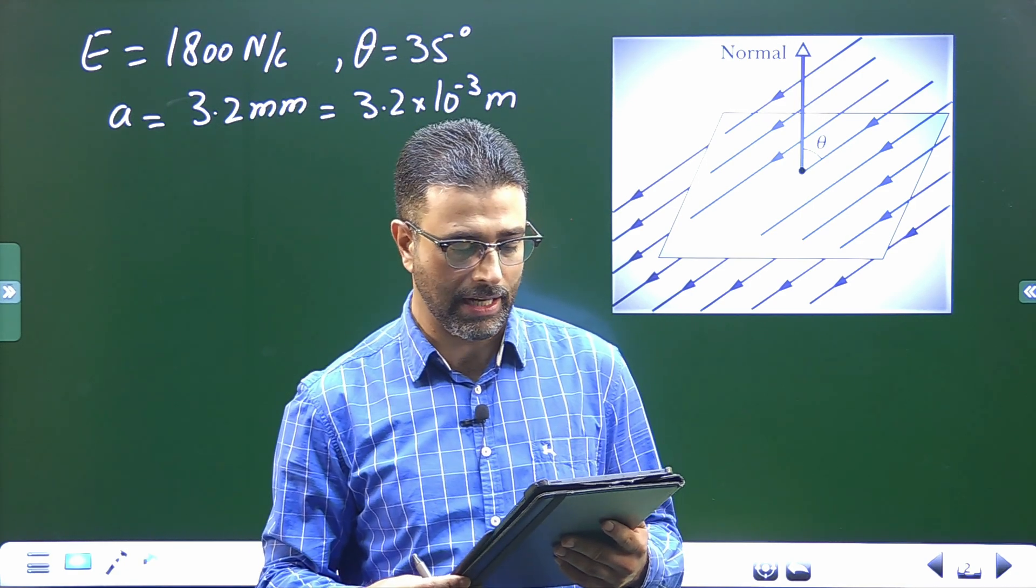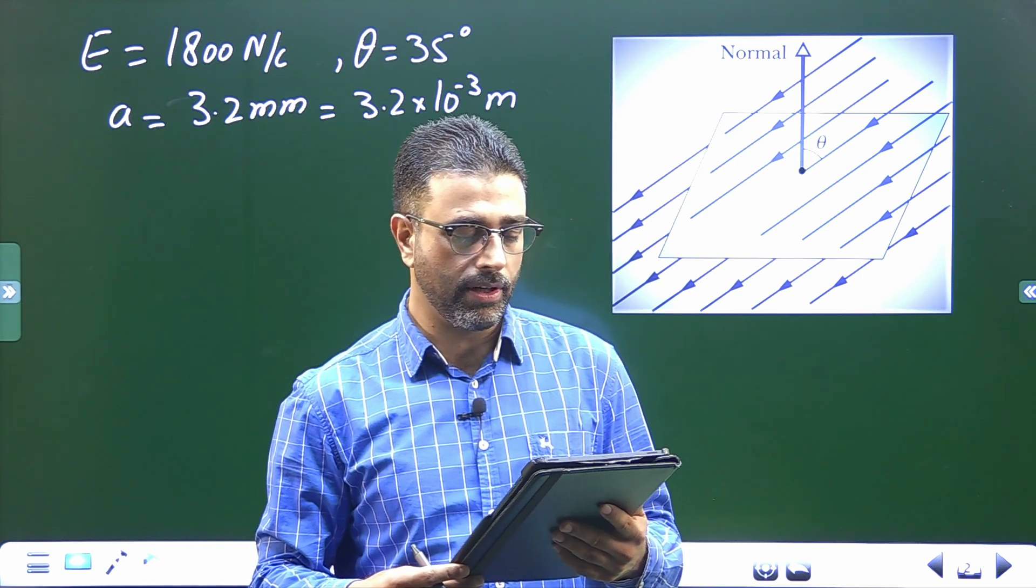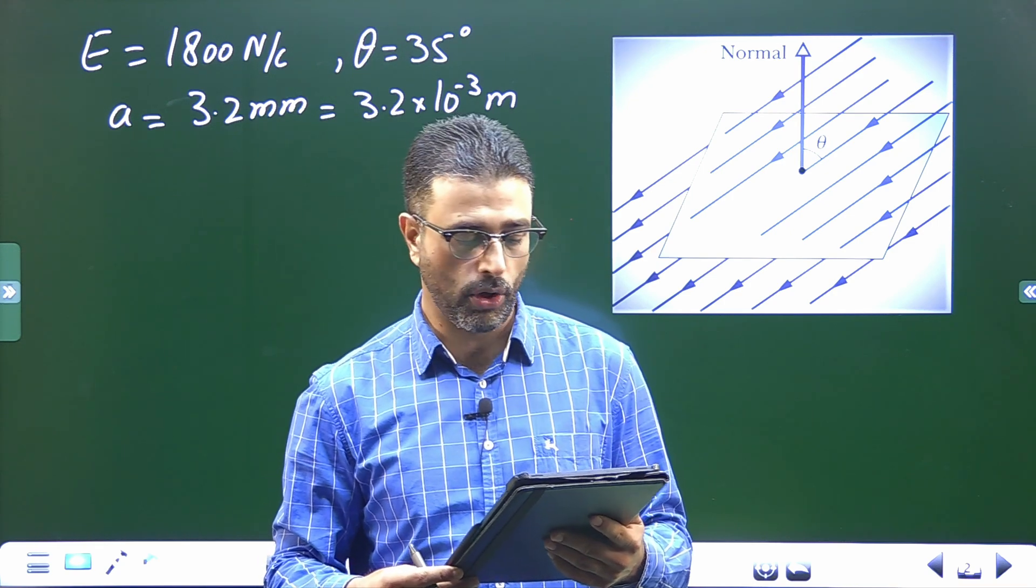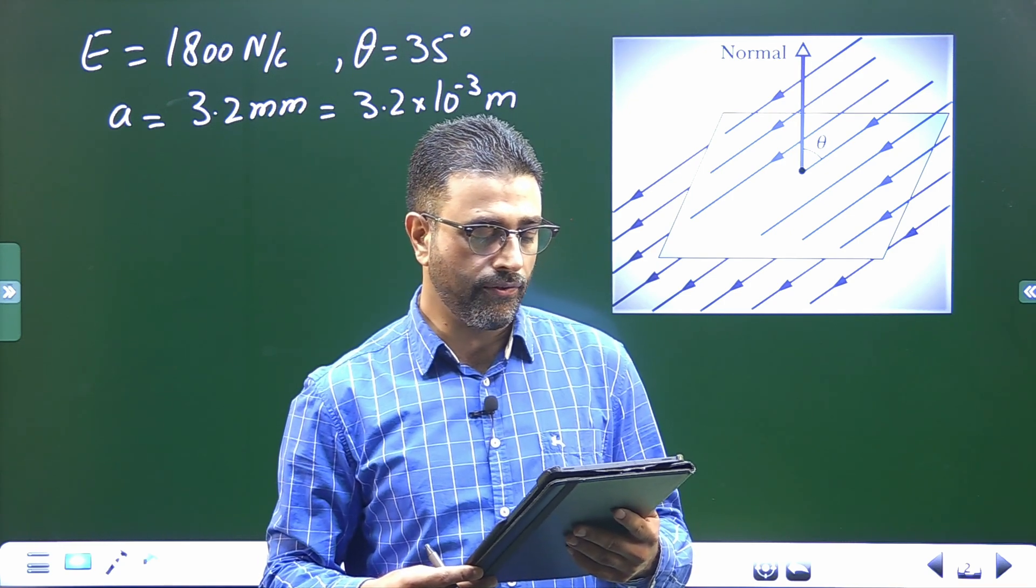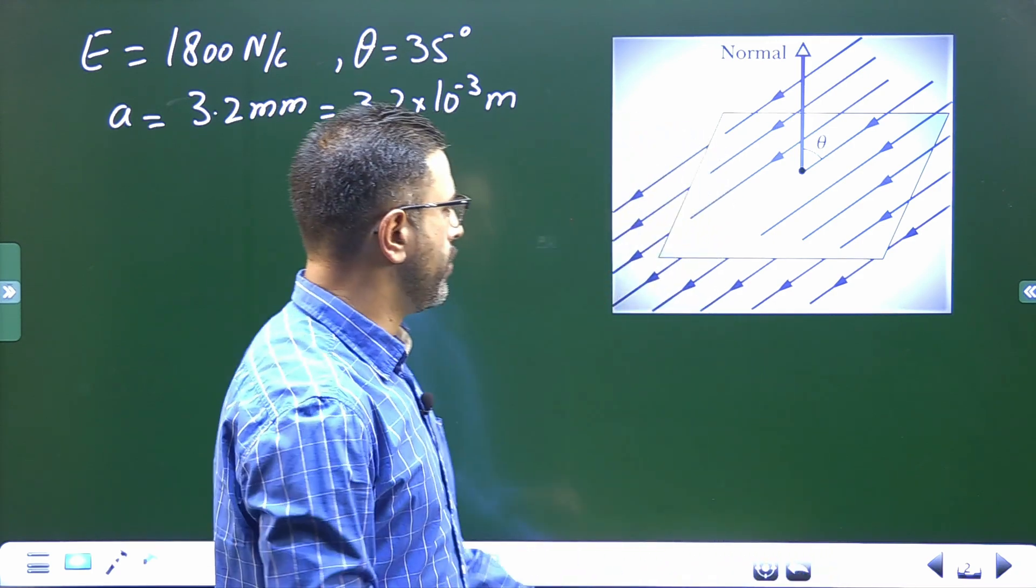With the normal to the surface as shown. Take the normal to be directed outward as though the surface were one face of a box. Calculate the electric flux through the surface. So we are given uniform electric field here, the value magnitude of the electric field is 1800 Newton per Coulomb, and we're given